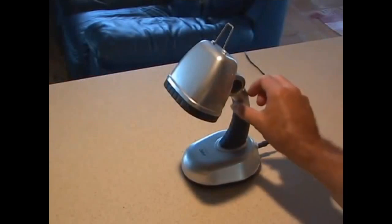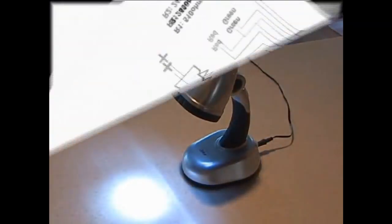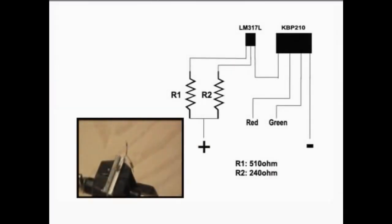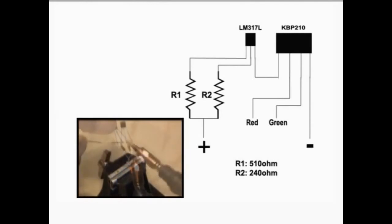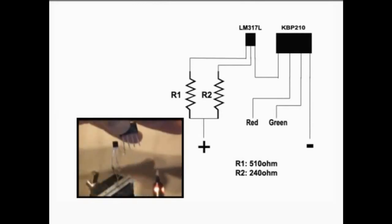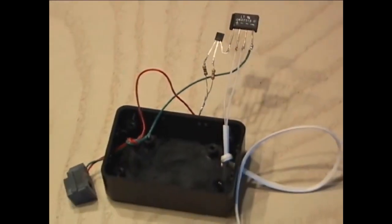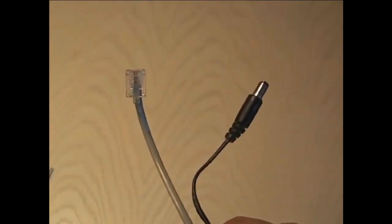My test subject is this LED light I picked up at Walmart. I began assembling the small circuit using the two resistors, the regulator, and the bridge rectifier. I also used a small hobby box to mount everything in. Then I made an interface cable for the light to connect to the phone jack.